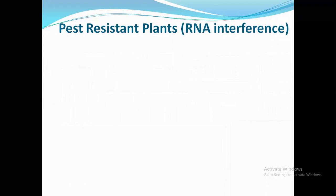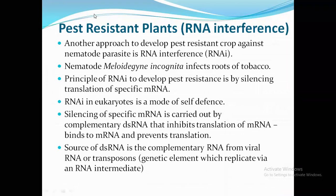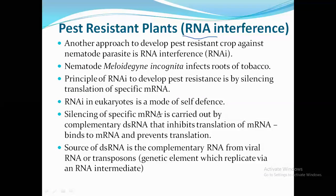Another method of pest resistance is through RNA interference. RNA interference means we interfere with RNA. We already know the central dogma: DNA to RNA to protein. These toxins are made by parasites from RNA. So what we do is block it at the RNA level — we do not allow the protein to be made, and as a result it will not be able to cause any kind of infection. This method is called RNA interference.